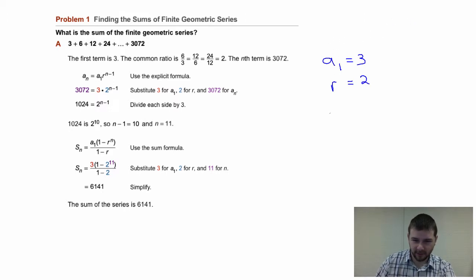Determining n takes just a little more work, but it can be done using the explicit formula. A sub n equals the first term, a sub 1, times the common ratio raised to the n minus 1 power. This should look familiar from a couple sections back. A sub n, our final term in the series, we know is 3072. So that will equal our first term, which we've identified as 3, times our common ratio, 2, raised to the n minus 1 power. Our goal here is to solve for n, so we should divide both sides of the equation by 3.